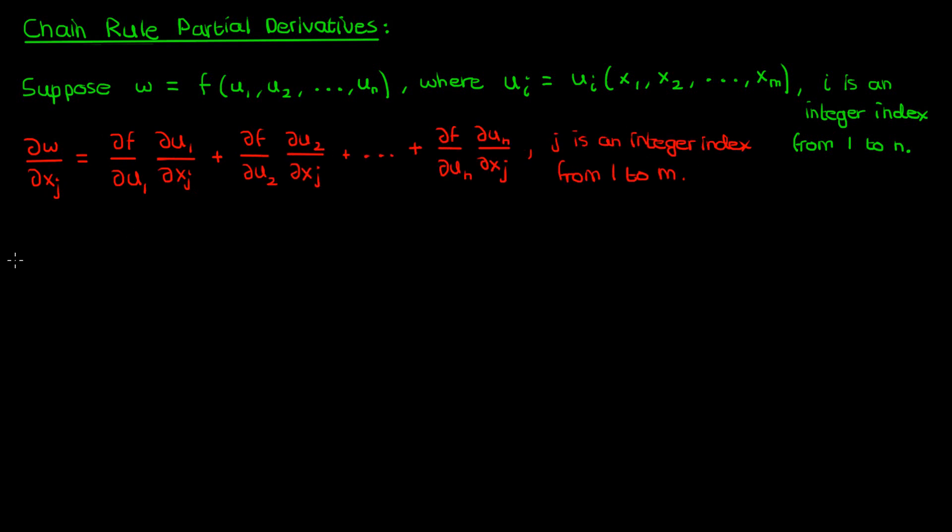We can actually shorten this expression using the rules of Einstein notation. The index i which varies from 1 to n is being summed over. So we can write the partial of w with respect to xj as the partial of f with respect to ui times the partial of ui with respect to xj, where i is the repeated index, the dummy index that's being summed over.